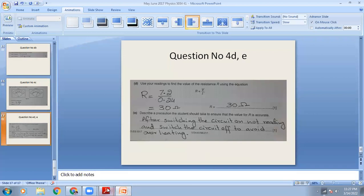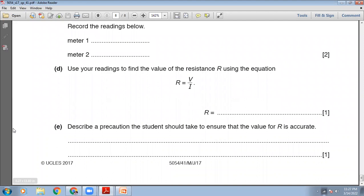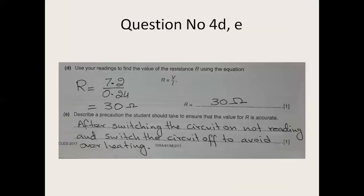Use your readings to find the value of resistance R using R = V / I. The voltage V is 7.2 volts and the current I is 0.24 amperes. So 7.2 divided by 0.24 gives 30 ohms — the resistance is 30 Ω. Describe a precaution to ensure the value of R is accurate: whenever you switch on the circuit, immediately note the ammeter and voltmeter readings and then switch off the circuit to prevent overheating, since overheating changes the resistance and current values.